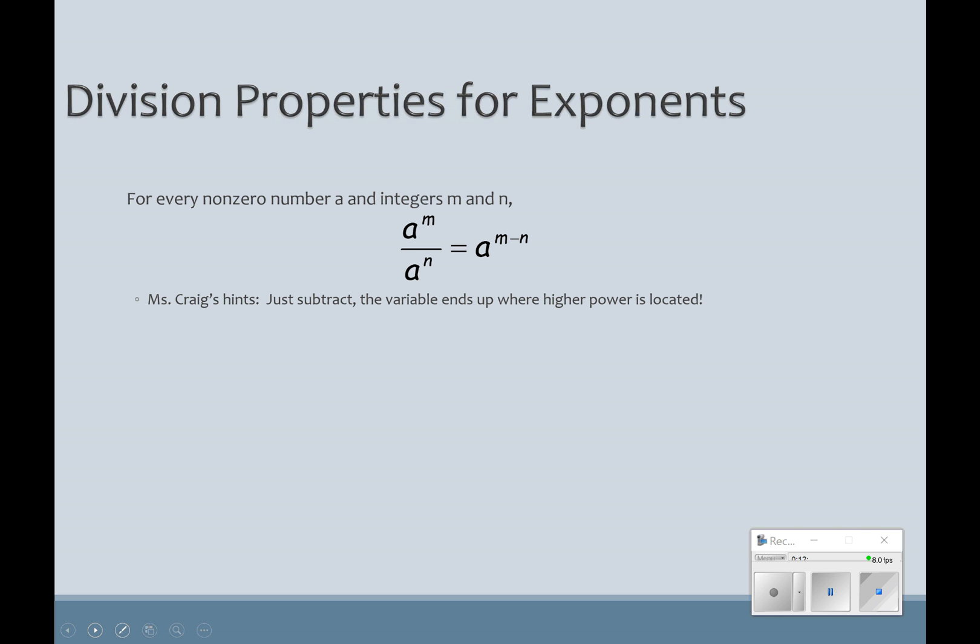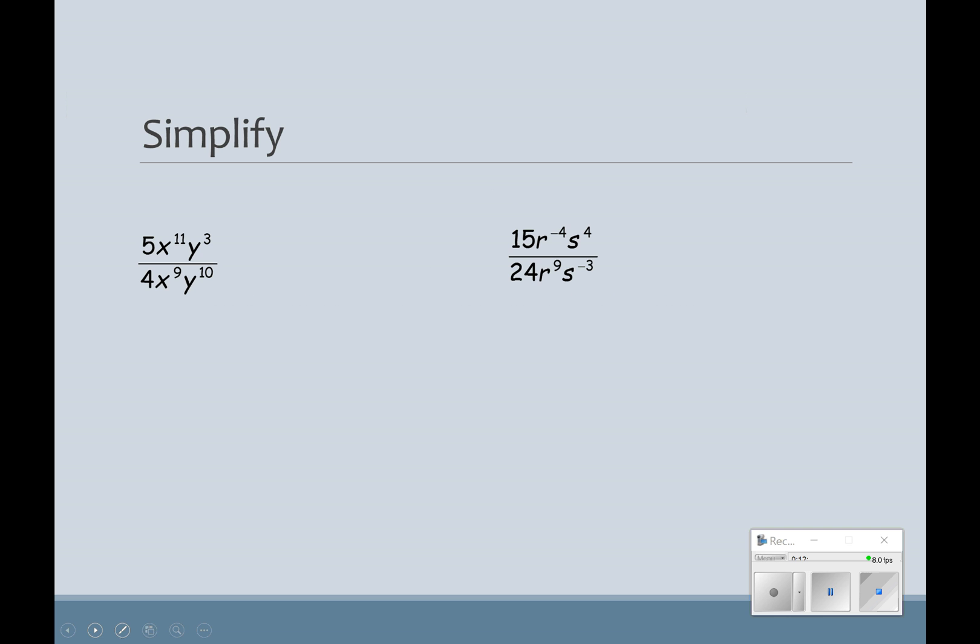So the division property for exponents says that for every non-zero number a and integers m and n, a to the m divided by a to the n equals a to the m minus n. Nice, big, bad rule to remember. But how I remember it is, I'm going to subtract, and the variable's going to end up where the highest power is located. So how does that look? What does that look like?